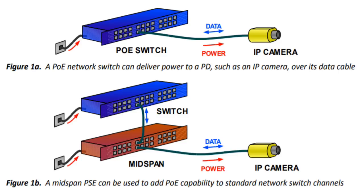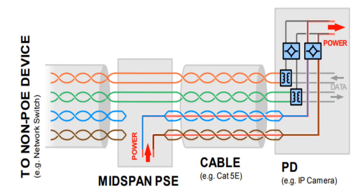Let's see how a PoE-enabled network switch is connected to powered devices like an IP camera using an Ethernet cable. If the network switch is PoE enabled, we can directly connect the power source equipment with the powered device. If the switch is not PoE enabled and cannot supply power to the powered devices, then you will require another device known as a mid-span. This mid-span adds the PoE capability to the standard networking switch. In the wiring arrangement, the data pairs go as-is and power is supplied by this mid-span over the spare pairs.